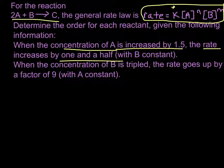And we are also told that when we triple the concentration of B, the rate goes up by a factor of 9, with A constant. So let's go ahead and figure out the orders for each one of these reactants.